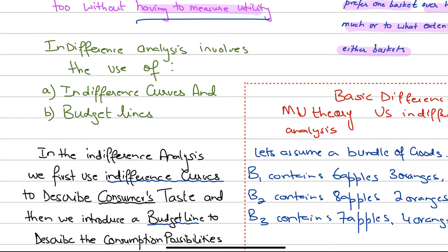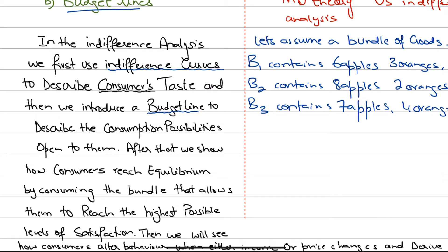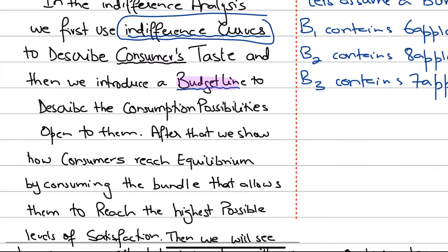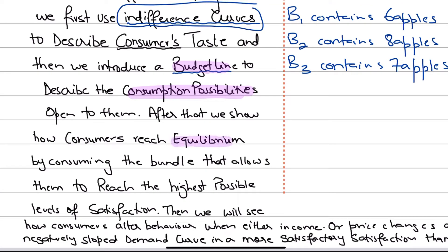The indifference curve analysis involves two key tools: number one, the indifference curve, and number two, the budget line. This is an introductory video — we will study what indifference curves are and what budget lines are. The indifference curves describe the consumer's tastes, while the budget line tells us the different consumption possibilities that are open to the consumer.